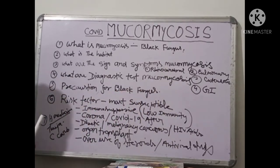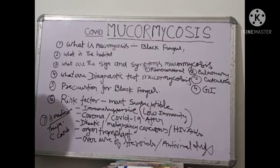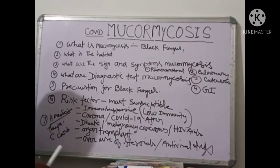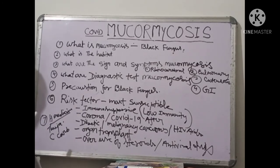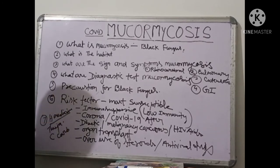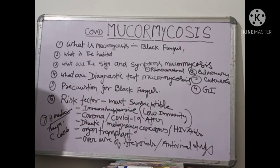In rhinocerebral mucormycosis, the most common symptom is eye-related — the eyes become very swollen, tender, and very red. For diagnostic tests, the first is MRI, the second is CT scan, and for a definitive diagnosis, biopsy is the most reliable test, along with fungal culture, which allows us to properly identify the fungal colonies.